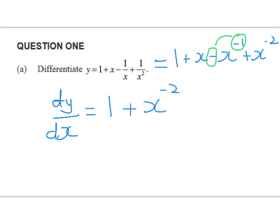Same again on this one. Bring down the power, we've got -2x^-3. Let's clean that up and we get 1 + 1/x² - 2/x³.